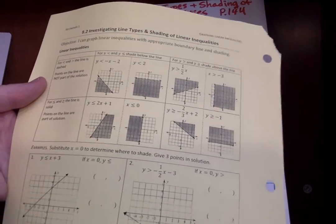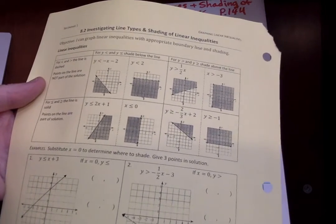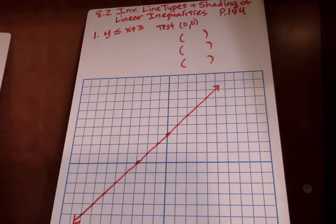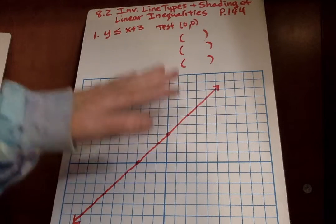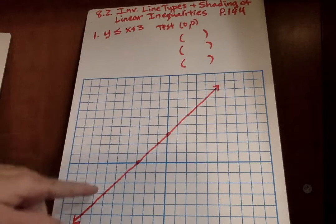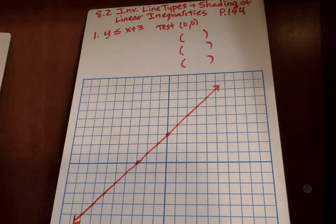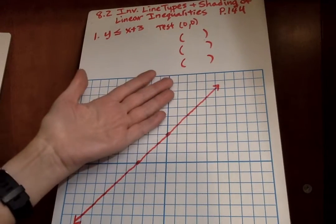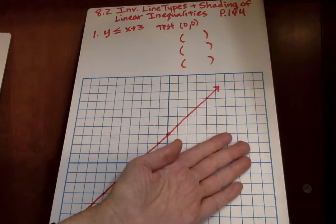Now I'm going to jump to number one and go through the steps of graphing an inequality. The first thing you want to do is, oh they already have your line for you, normally you'd have to graph this line first. It's less than or equal to so that means it's a solid line. Now since we already have our solid line we have to shade either above or below the line.